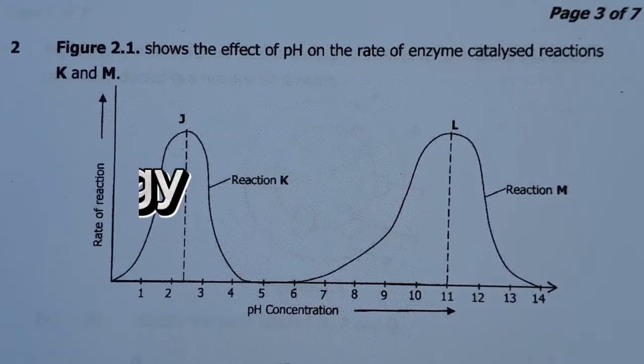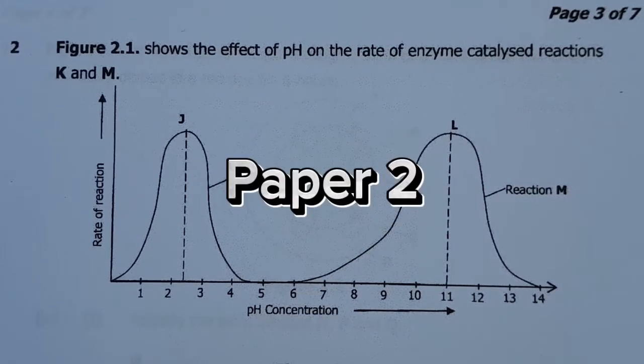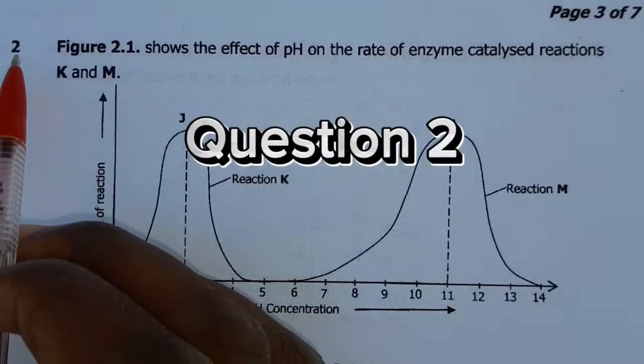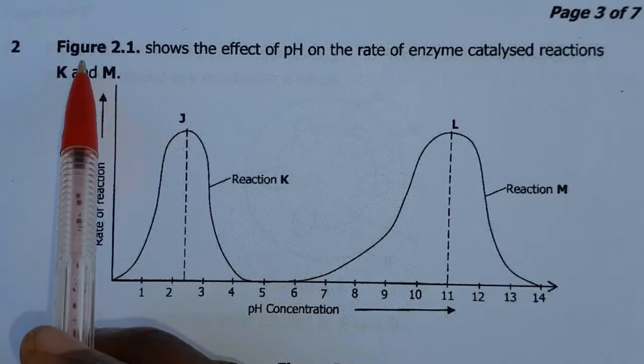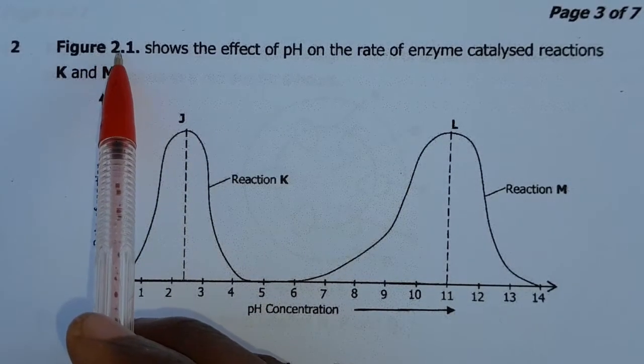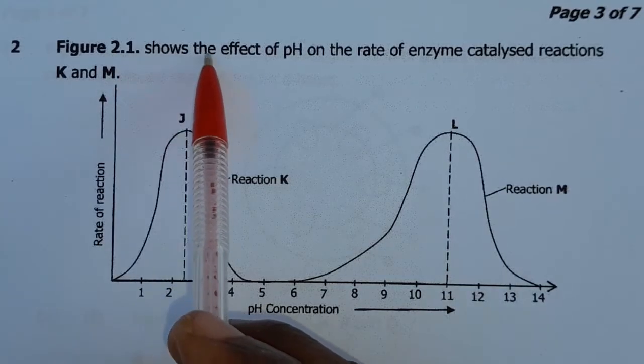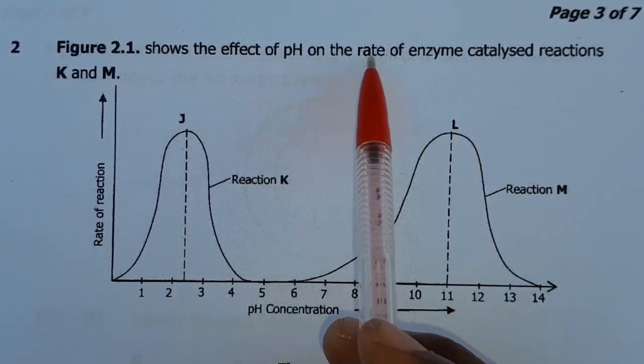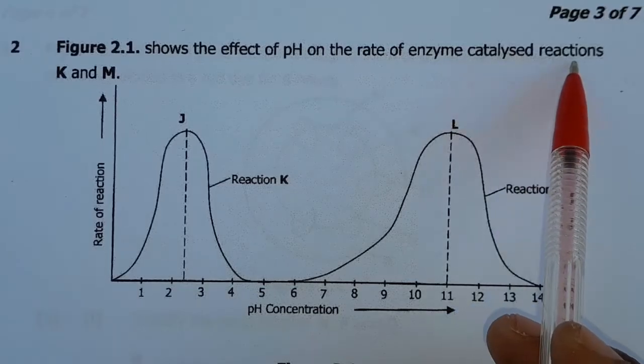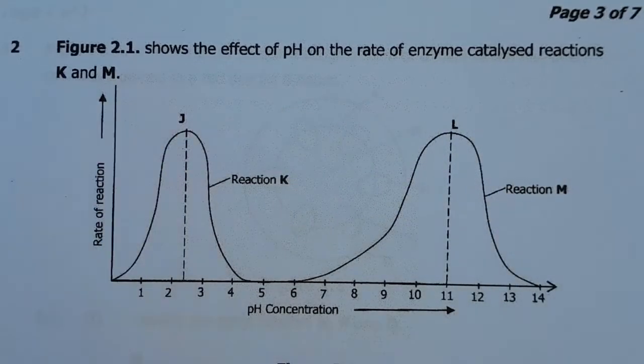In this video, we're going to look at 2016 Biology Paper 2 for the internal candidates, Question 2. So the information that we have is Figure 2.1 shows the effect of pH on the rate of enzyme-catalyzed reaction K and M.